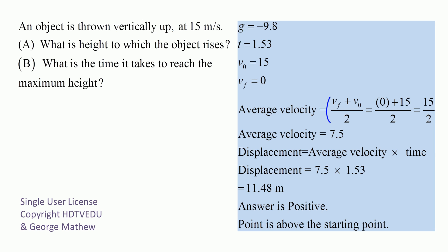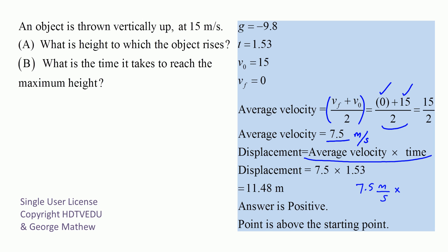Average velocity is final plus initial divided by 2. Final velocity is zero at the instant it reaches the maximum height; initial velocity was 15. So zero plus 15 divided by 2 equals 7.5 meters per second. Displacement is average velocity times time: 7.5 meters per second times 1.53 seconds. Seconds cancel out, giving us our answer in meters — 11.48 meters.